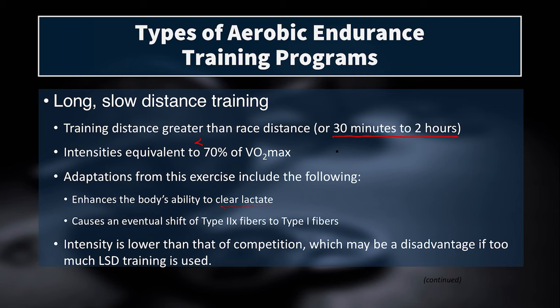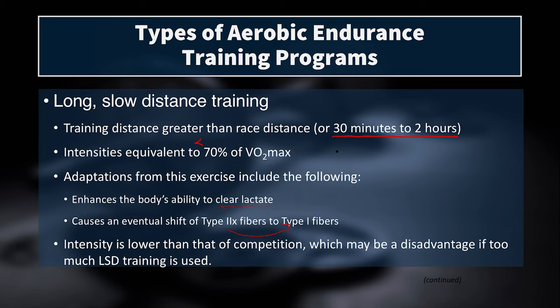Another important adaptation is that this type of training causes a shift of type 2x fibers towards type 1 fiber characteristics. We may not undergo a complete fiber type change, but our fast twitch fibers start to develop slow twitch capabilities — more aerobic enzymes, more mitochondria, and all of that.